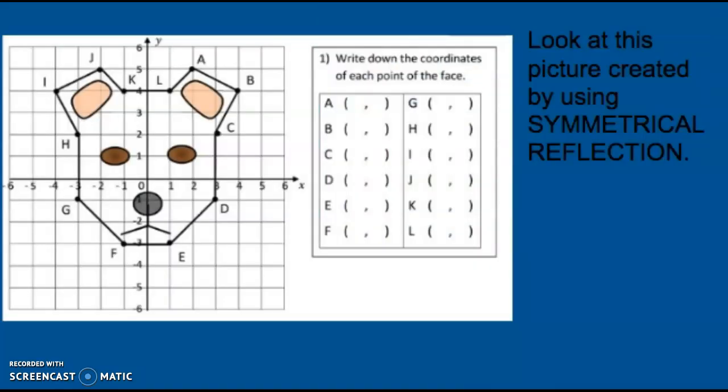Look at this picture created by using symmetrical reflection. Everything that was done on one side of the y-axis was copied on the other side of the y-axis. The only thing that is different is across the x-axis. Therefore, the reflection is across the y-axis.